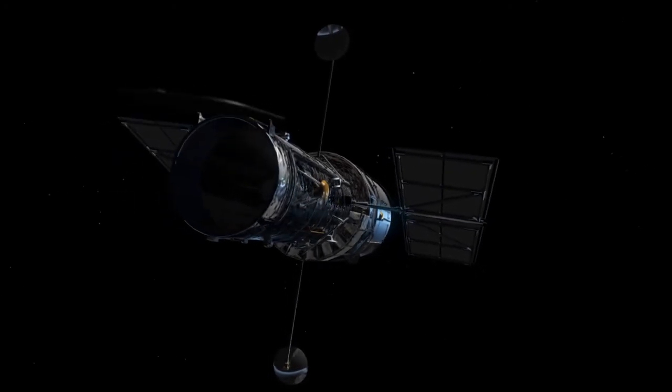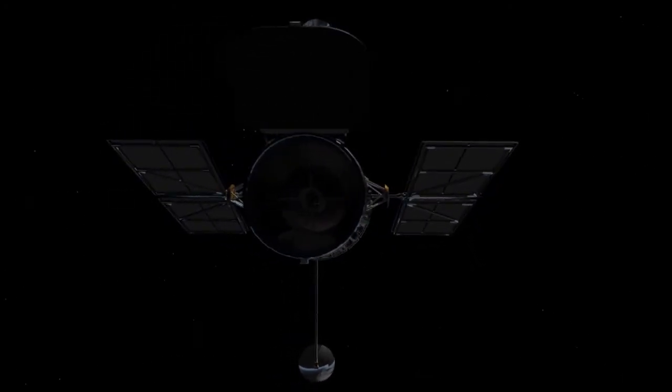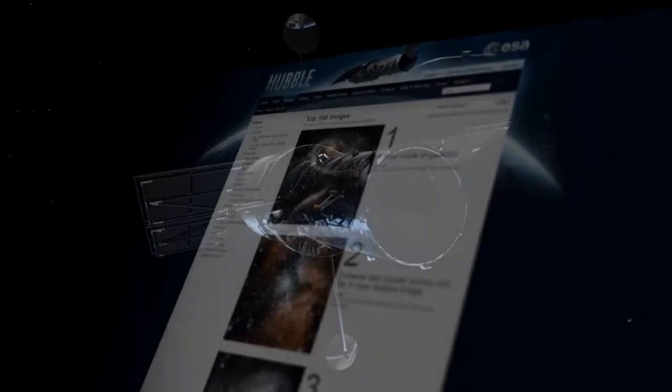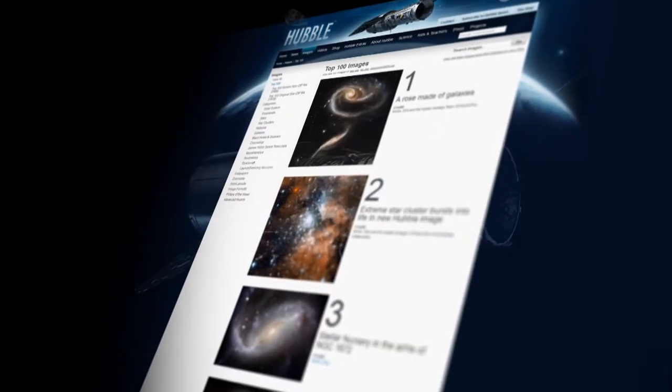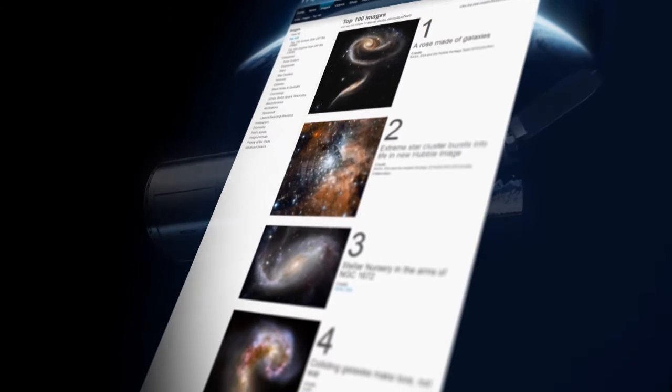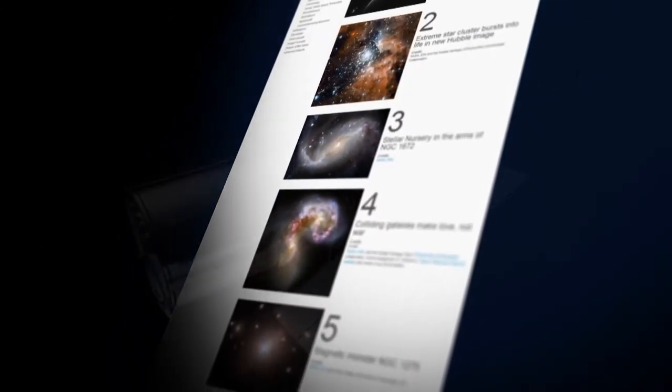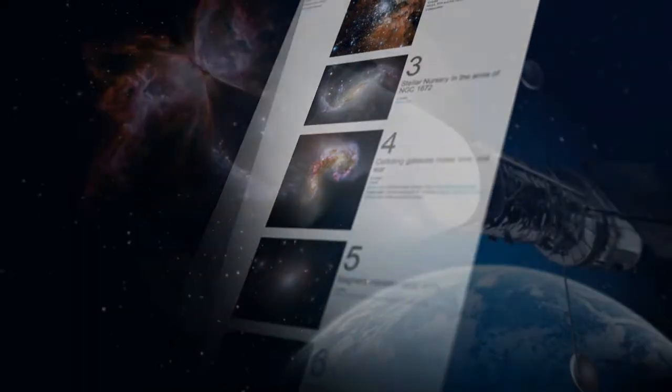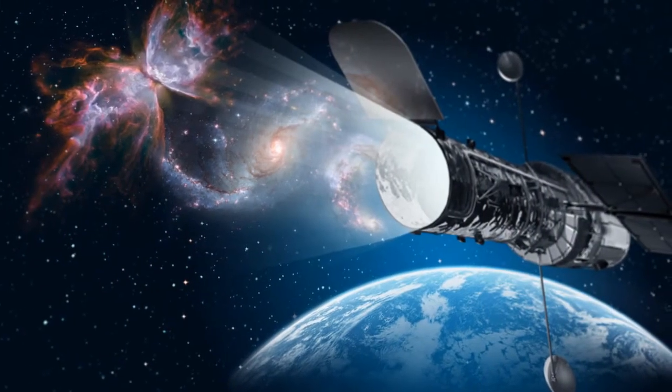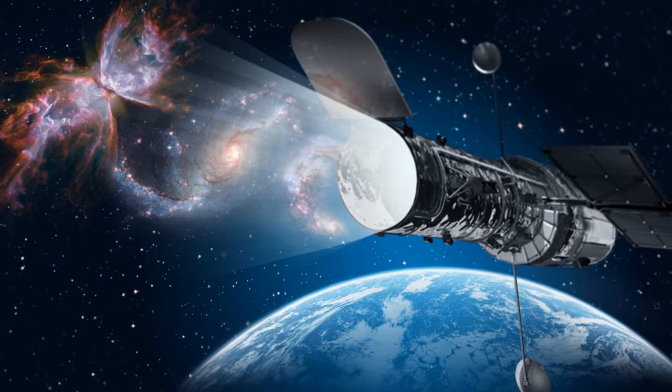Over two decades in orbit, the Hubble Space Telescope has made a huge number of observations. Every week we publish new ones on the Hubble website. But hidden in Hubble's data archives are some truly breathtaking images that have hardly ever been seen. We call them Hubble's Hidden Treasures, and we're looking for your help to bring them to light.